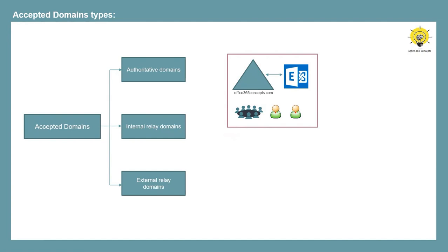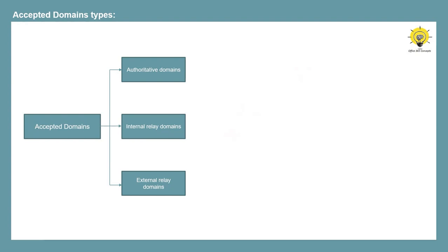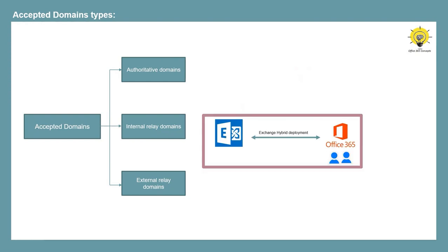The sender will receive an NDR or non-delivery report. The next type is internal relay domain, where you host some mailboxes in Exchange Server and some on a different Exchange organization, for example Exchange Online. You create an internal relay domain when you share the same domain name between two different Exchange organizations. In internal relay domain type, recipients are created as mail users in Exchange Online. If an email is sent to a user with a mailbox on-premise, Exchange Online doesn't reject that email — it looks for the outbound connector to route that email to on-premise Exchange Server. This scenario is also called shared SMTP namespace.